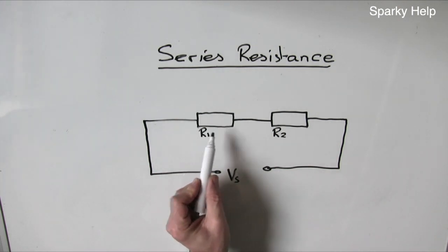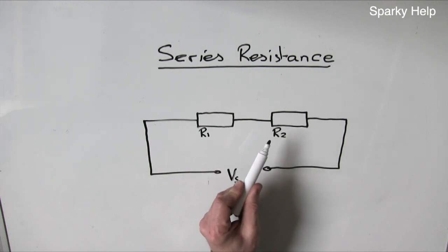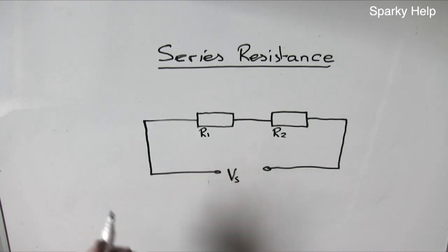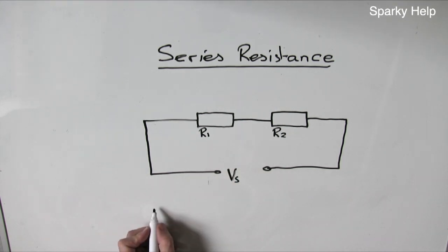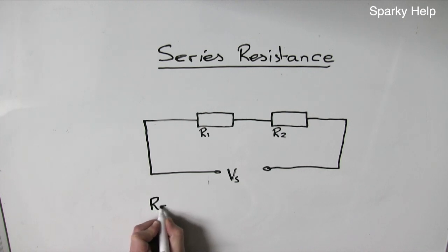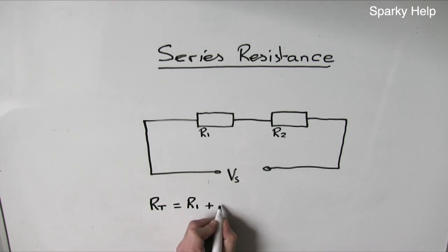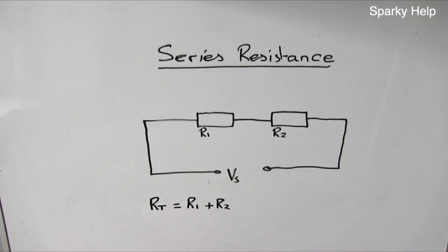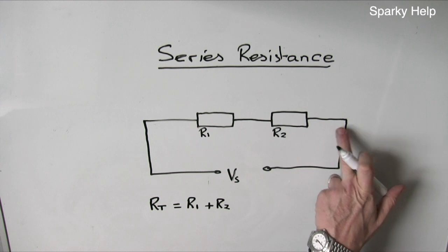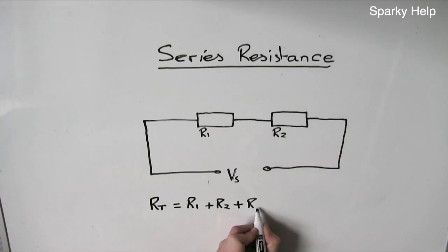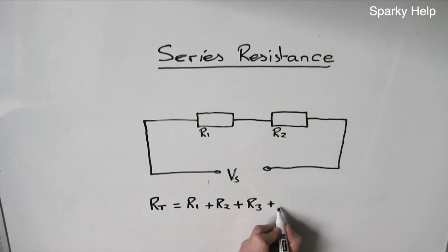So when we add resistance in series, it will only go up. Total resistance for the circuit is always going to increase, no matter what you add in the circuit. Therefore, the series formula is RT is equal to R1 plus R2, and if we keep adding more and more resistors in series, etc.